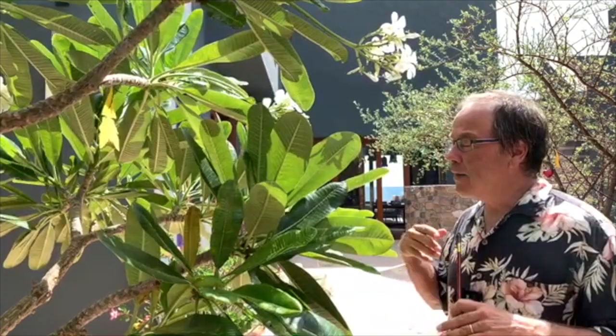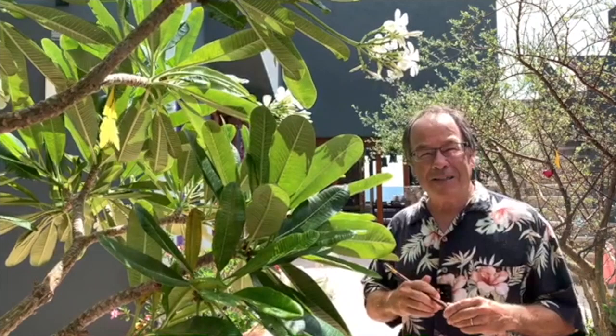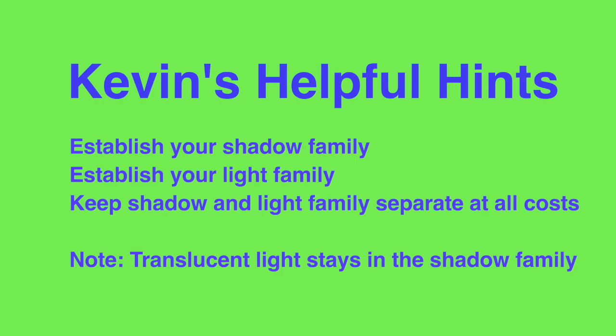One of the challenges I often come against is when we're painting vegetation. The light that comes through a translucent leaf is some of the brightest color. I need to determine: do I want to keep it in the light family or the shadow family? I determine I want to keep it in the shadow family.